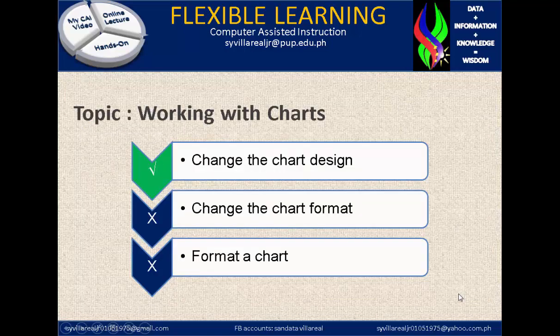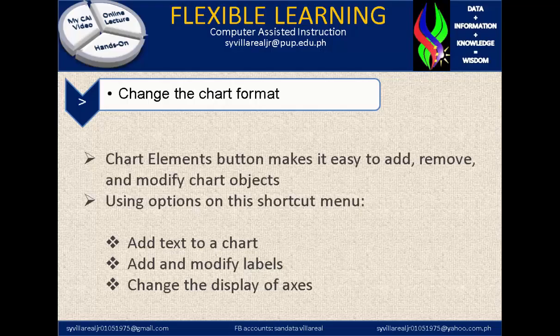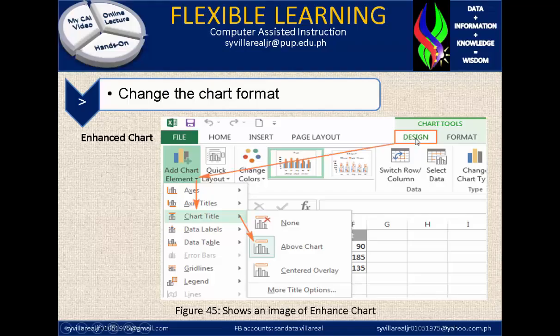Now let's move on to the second topic: change the chart format. The chart elements button makes it easy to add, remove, and modify chart objects using options on the shortcut menu, such as add text to a chart, add and modify labels, and change the display of an axis. Under the design menu, you can click the ribbon button to add chart elements. Clicking the drop-down button reveals axis, axis title, chart title, data labels, data table, grid lines, and legends, which are needed in your chart format.